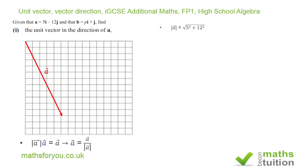The magnitude of vector a is equal to the square root of five squared plus twelve squared, effectively using Pythagoras here. So when we open up our brackets we find that the magnitude of vector a is the square root of 169 which is 13.